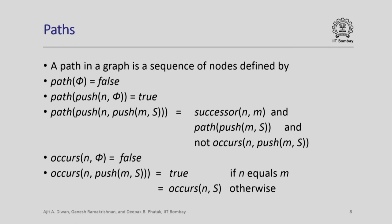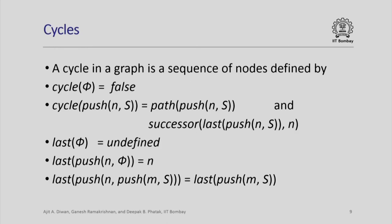The occurs function tells us whether a given node occurs in a given sequence of nodes. occurs(n, φ) is false; occurs(n, push(n′, s)) is true if n equals n′, otherwise it is true if n occurs in s itself. This will be useful later on.